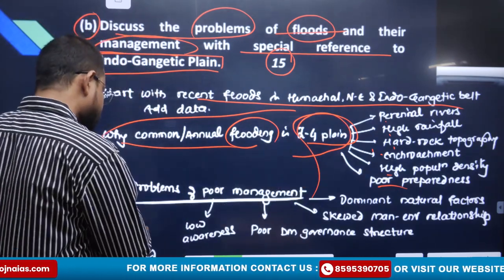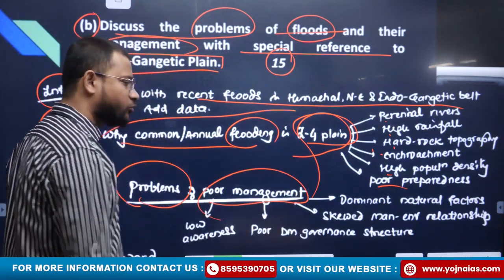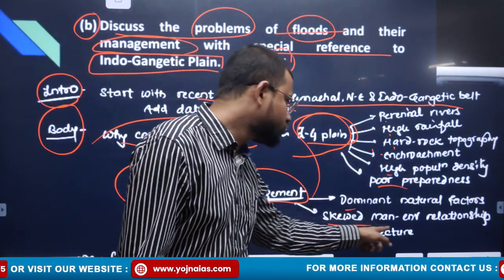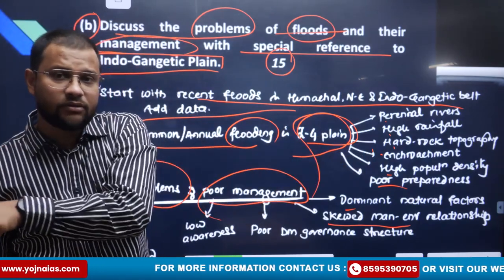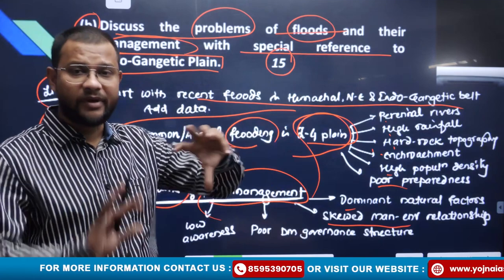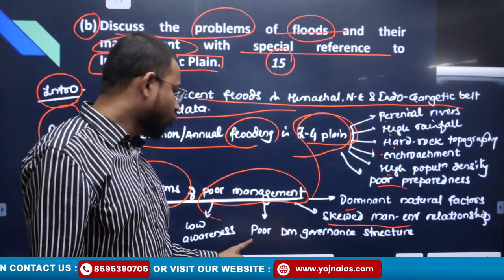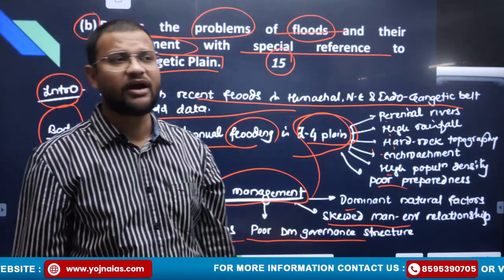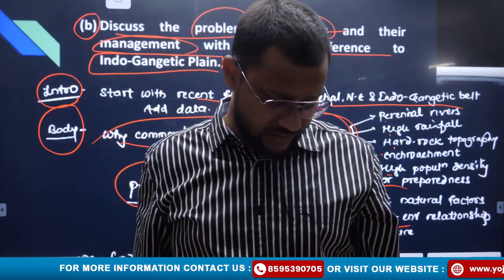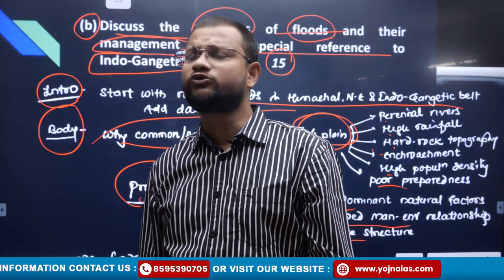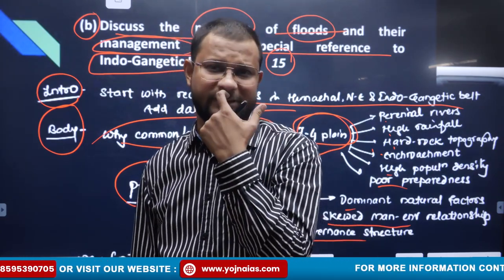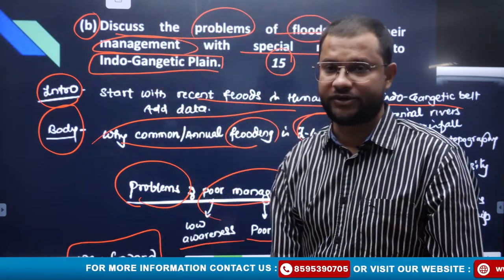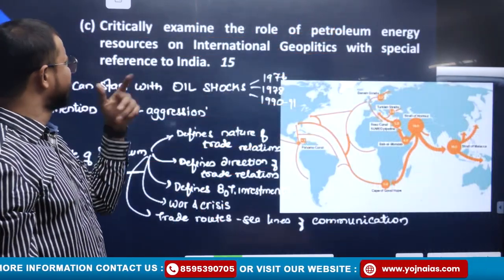Then the problems of poor management: dominant natural factor determinism, skewed man-environment relationship due to modern means of development — neodeterminism. Poor disaster management governance and structures, low level of awareness — though people have some cultural practices, they are not really aware of how to deal effectively with flooding. At the end, way forward.